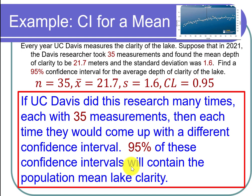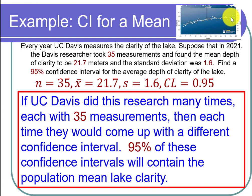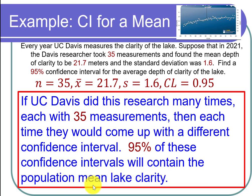To interpret the 95% confidence level: if UC Davis did this research many times — each with 35 measurements — then each time they would get a different confidence interval. 95% of these confidence intervals will contain the population mean lake clarity. That is the interpretation of the confidence level of 95%.